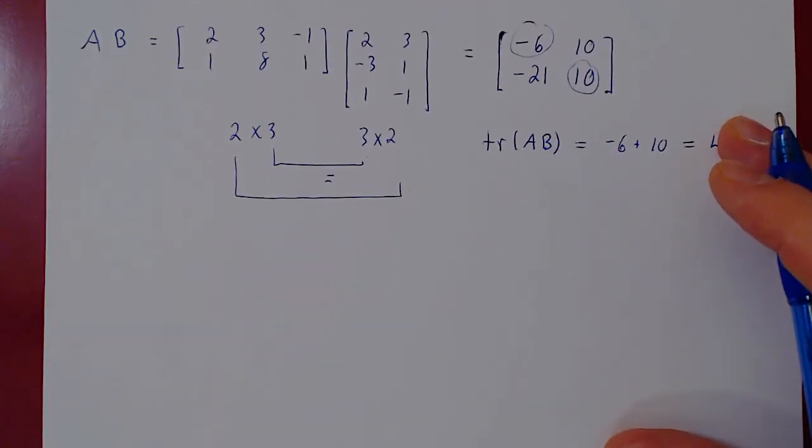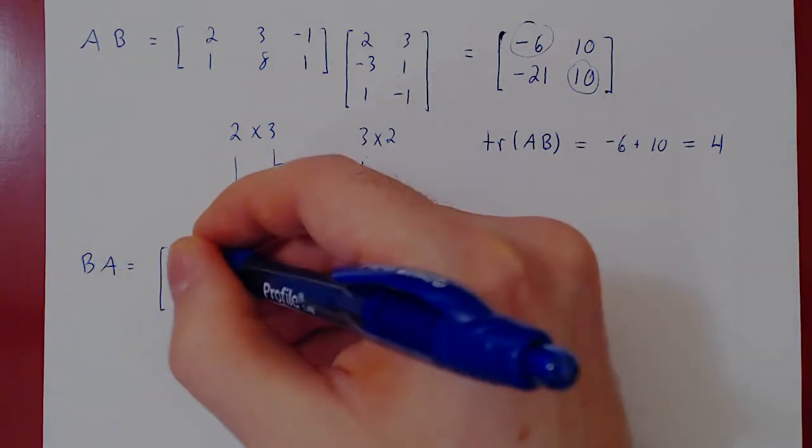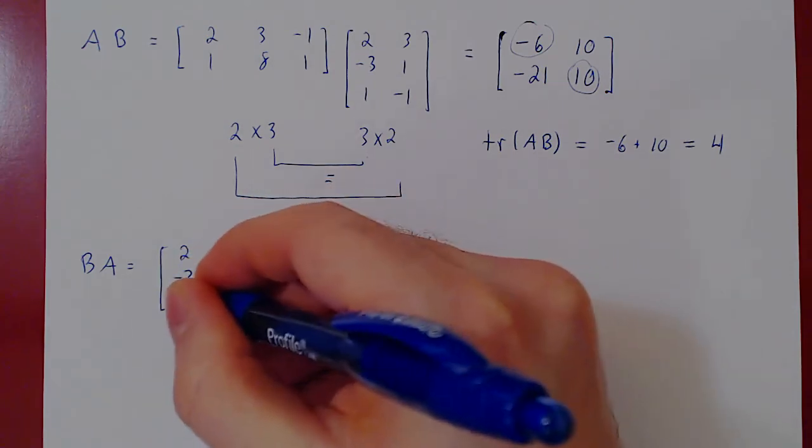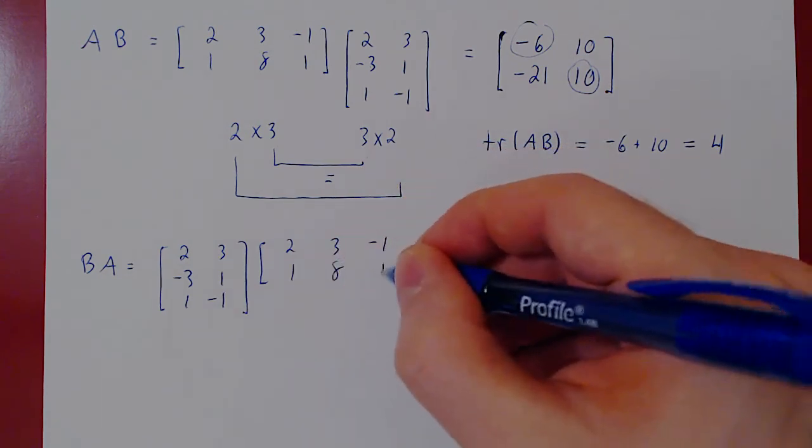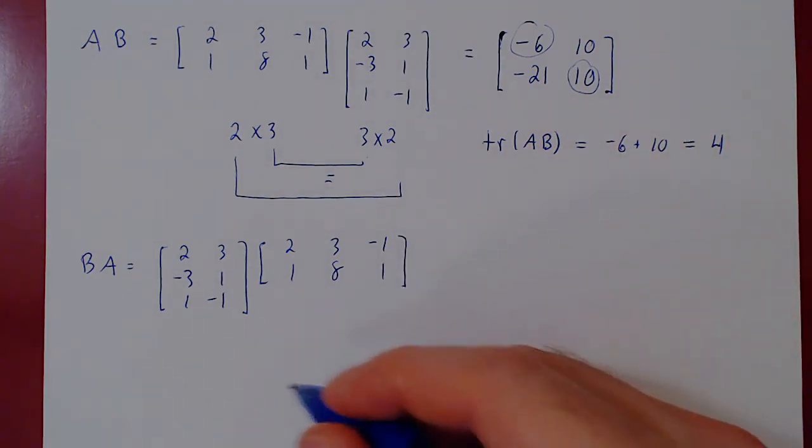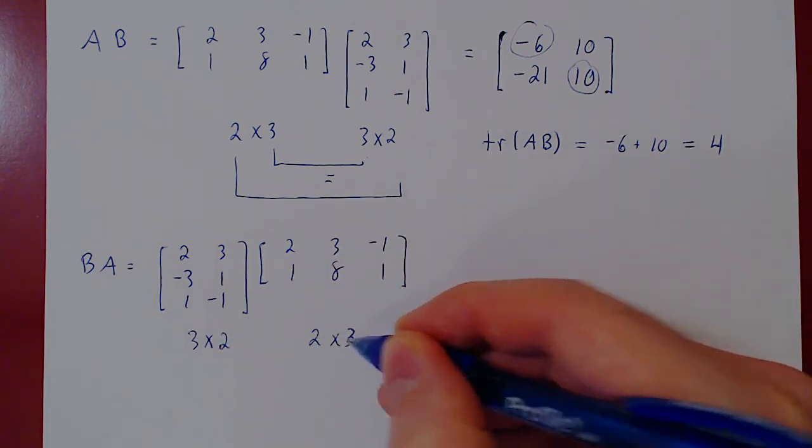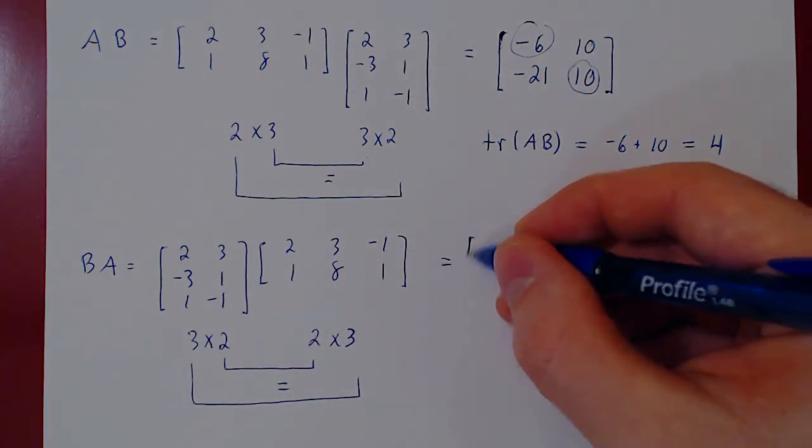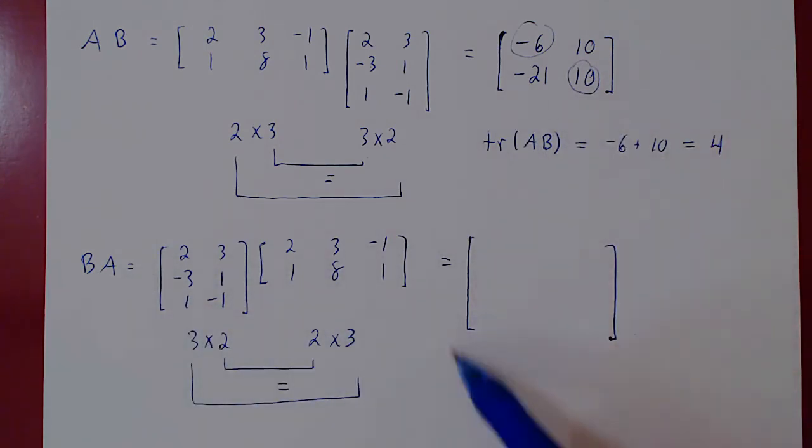Let us now compute B times A. Let's invert the order of our two matrices. So B, 2, 3, negative 3, 1. 1, negative 1. Times the matrix A. 2, 3, negative 1. 1, 8, 1. Well, let's see. B is a 3 by 2 matrix. A is a 2 by 3 matrix. Multiplication is defined. The result is a 3 by 3 matrix. So right away, there is a big difference. Where AB was a 2 by 2 matrix, BA is now a 3 by 3 matrix, still a square matrix, and so the trace still makes sense.